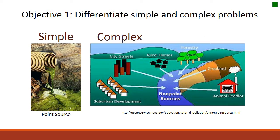The first step is differentiating simple and complex problems. Using watershed terminology, we can think of simple problems as point source problems and complex problems as non-point source problems. Talking about water pollution, a simple problem would be a single pipe coming from a single building pushing effluent out into a nearby stream — one problem, one source. It's relatively simple to take care of: you eliminate the source and eliminate the problem.